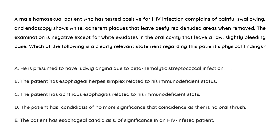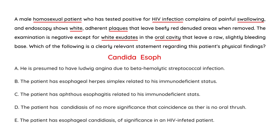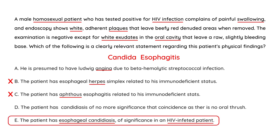Let's look at a clinical vignette. A male homosexual patient who has tested positive for HIV complains of painful swallowing, and endoscopy shows white plaques that leave a beefy red denuded area when removed. Examination is negative except for white exudates in the oral cavity that leave a raw, slightly bleeding base. This patient has candida esophagitis in the context of HIV infection — that is the best answer choice.